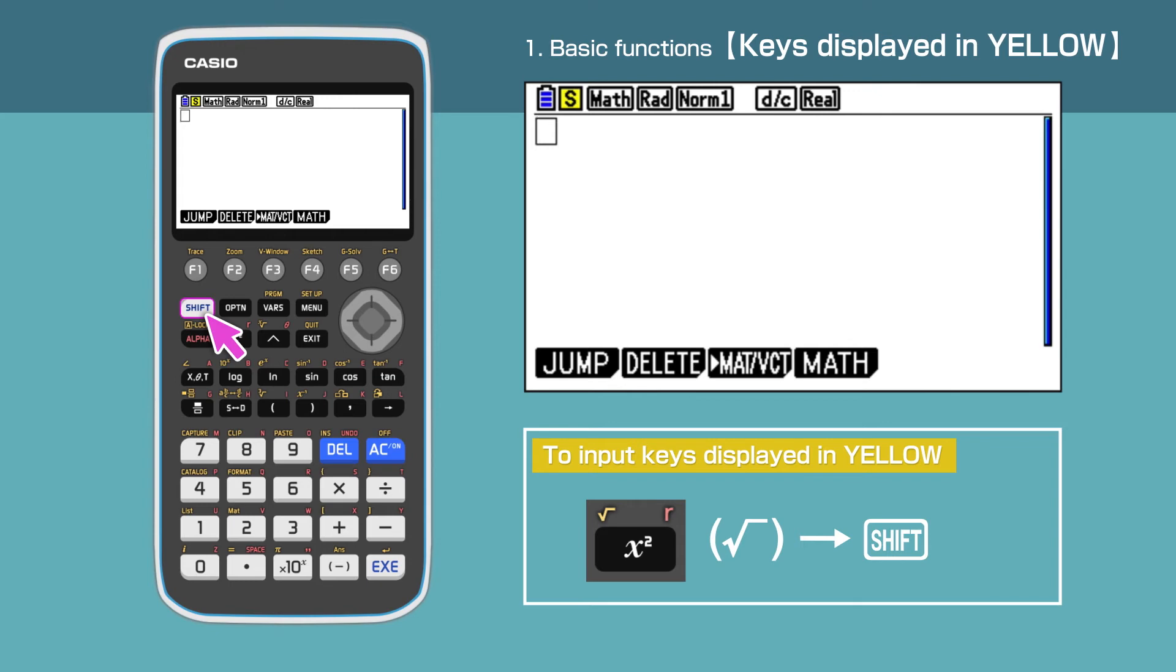Then enter the x squared key. The square root sign is displayed.